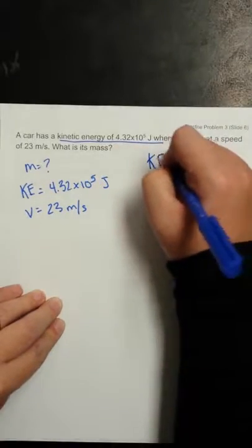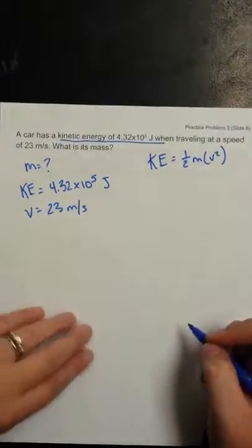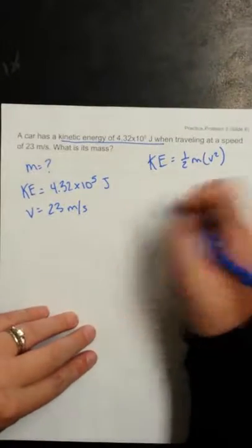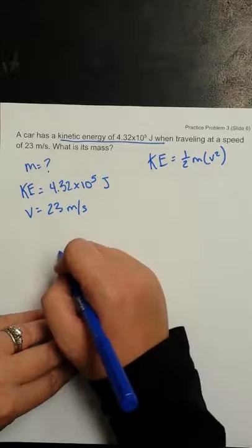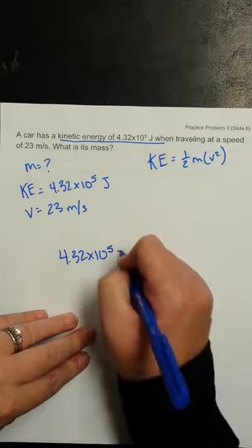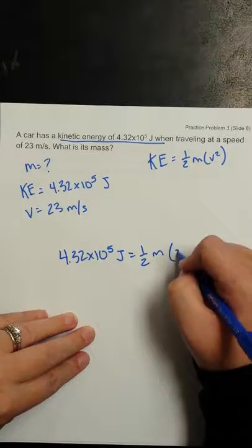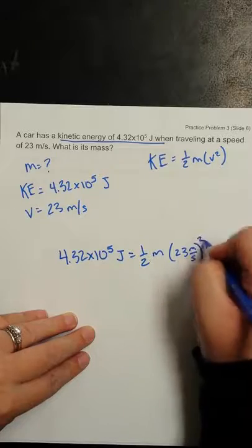We know that kinetic energy is equal to one-half mass times velocity squared. So we can go ahead and plug in what we know. So we've got 4.32 times 10 to the fifth joules is equal to one-half m times 23 meters per second squared.